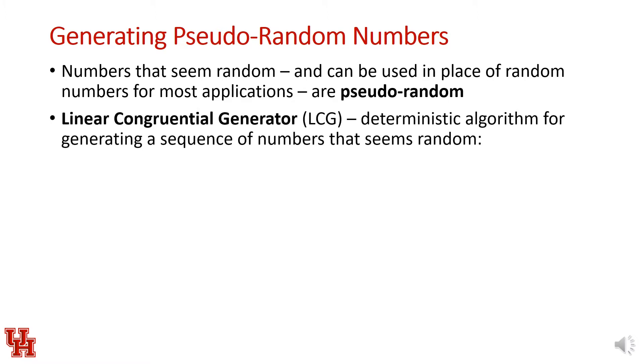One of the simplest techniques for generating random numbers is called a linear congruential generator. This is a deterministic algorithm for generating a sequence of numbers that appears random. The general formulation of an LCG is X_{n+1} = (aX_n + c) mod m. This is just a linear expression, a times a previously generated random number plus c. The modulo operation returns the remainder of a division of one operand by the second.